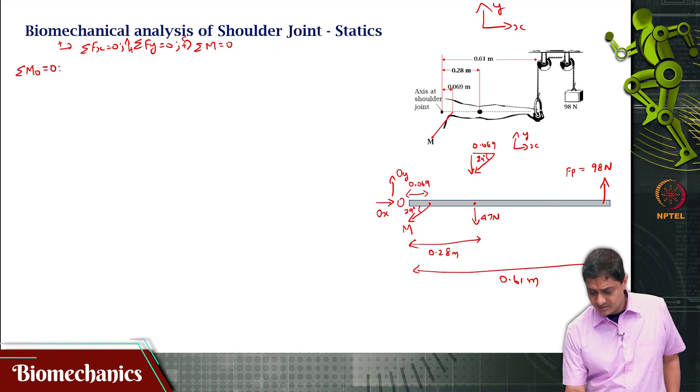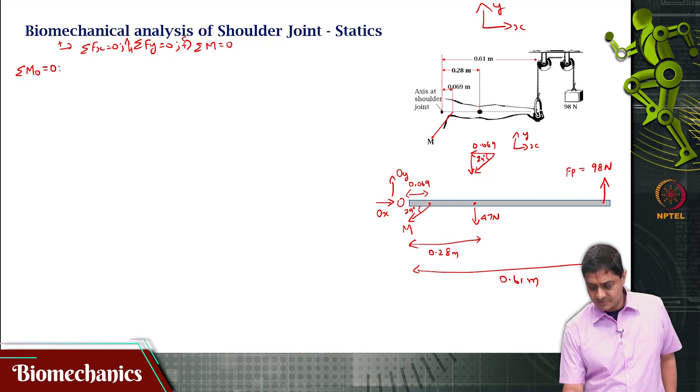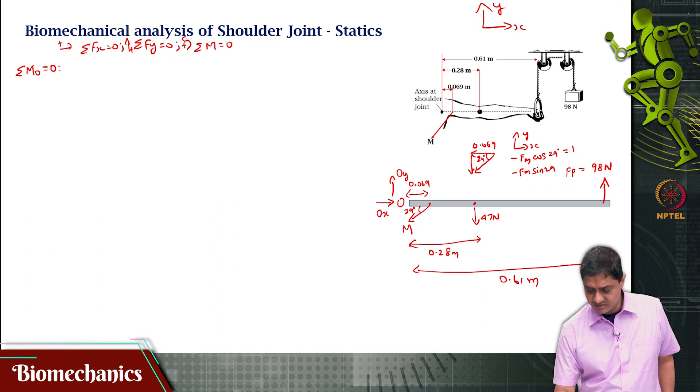So, that would be, in other words, this will be the direction of the forces that are involved. But in this xy axis, this will be minus fm cos 29 and a minus fm sin 29, this will be the fmx and fmy components.